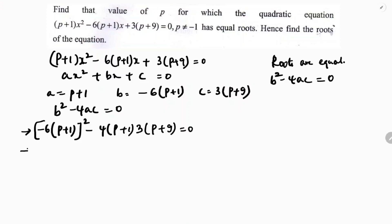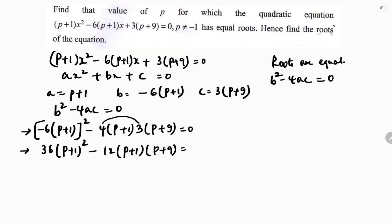Simplifying: 6² is 36, so 36(p+1)² - 4×3·(p+1)(p+9) = 0, which gives 36(p+1)² - 12(p+1)(p+9) = 0.